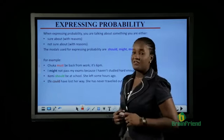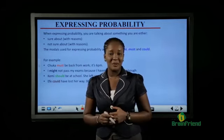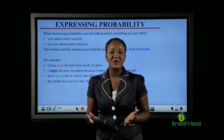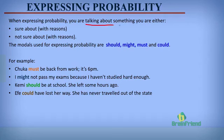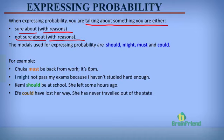Another function of modal verbs is that they help us express a probability. When we express probability, we are simply talking about something we are either sure about or not sure about, but we must have reasons to prove why. The modal verbs used for expressing probability are should, might, must, and could.